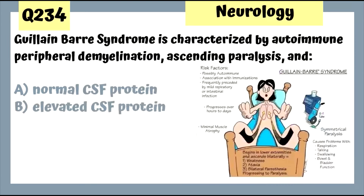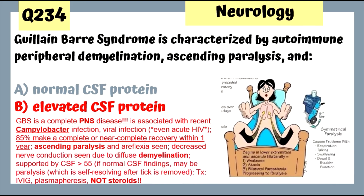Question 234: Guillain-Barré syndrome is characterized by autoimmune peripheral demyelination, ascending paralysis, and elevated CSF protein — that's the only CSF finding. It's a completely PNS disease, the opposite of MS which is completely CNS. It's associated with Campylobacter. Do not give steroids in this condition — unfortunately, they do not work.